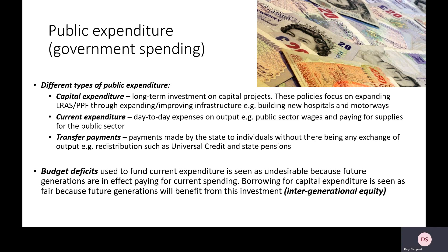Current expenditure relates to the day-to-day running of the public sector — the NHS, education, schools, colleges, the police, and other emergency services like the fire brigade. It covers the funding of daily operations: paying the wages of doctors, teachers, nurses, and police officers, and paying for the resources those organisations use day-to-day, such as paper, electricity, gas, and cleaning services.